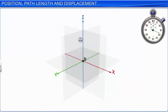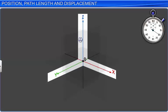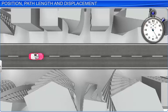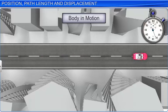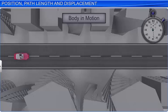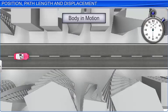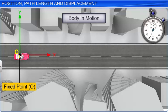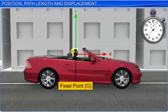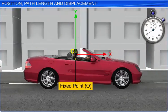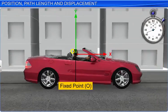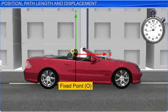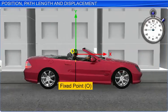A simple example of a car moving on a straight road will make this concept clear. Suppose you take a frame of reference with a fixed point on the road as the origin — we say that the car is moving. However, when you take a person sitting in the car as the origin of the frame of reference, the frame of reference itself is moving along with the car.